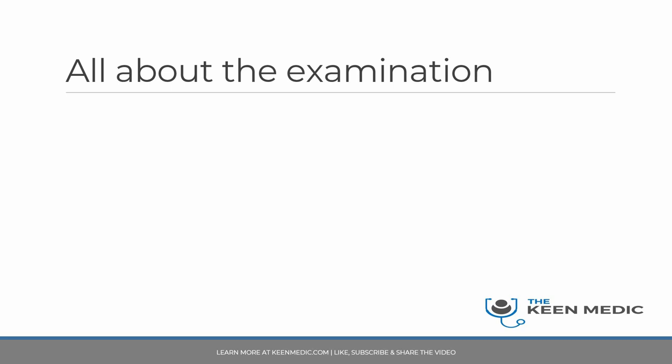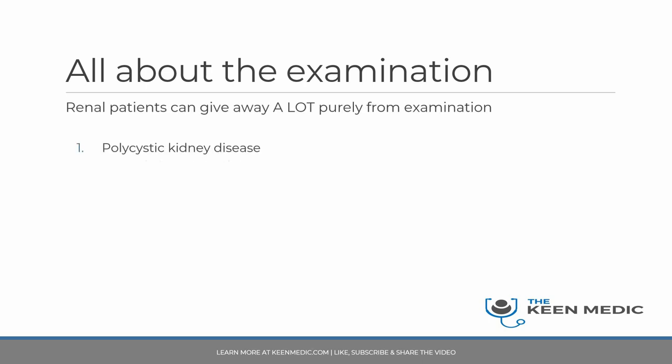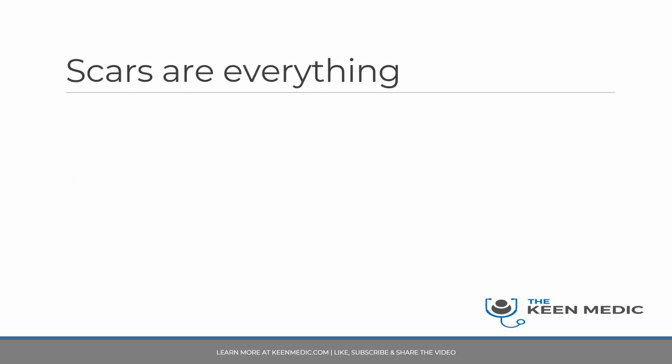This video is going to take you through all the important factors you need to consider. The three important conditions that will often be tested in MRCP PACES renal examinations are polycystic kidneys, diabetic nephropathy, and glomerulonephritis. These also happen to be the top causes of renal transplants in the UK. Polycystic kidneys and diabetic nephropathy are probably the two most common.